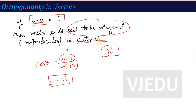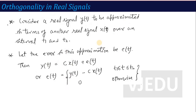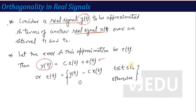That was orthogonal vectors. Now if we apply the same concept to signals — orthogonality in real signals — suppose there is a real signal y(t) which is approximated in terms of another real signal x(t) over an interval t1 to t2. There will be some error in this approximation, so mathematically: y(t) = c·x(t) + e(t), meaning there is some proportionality c between x and y, plus some error e(t). So the error e(t) = y(t) − c·x(t) for t between t1 and t2, and this error signal is 0 otherwise. Graphically, suppose this is your y(t) signal and this is your x(t) signal.